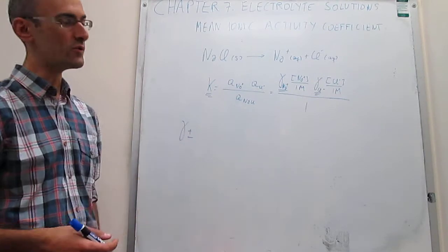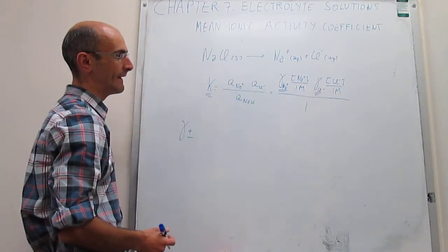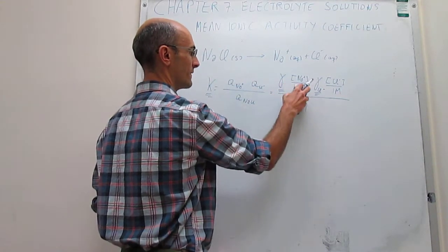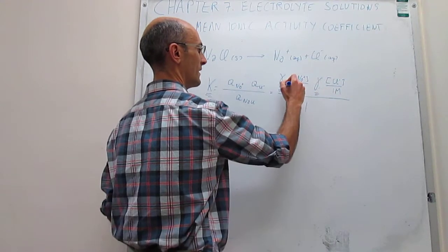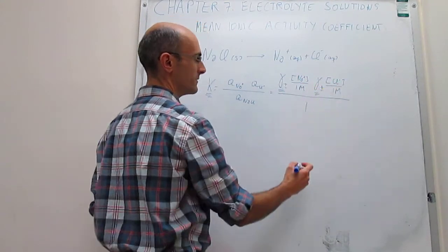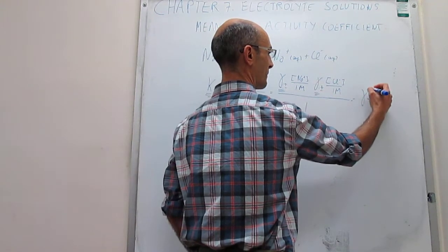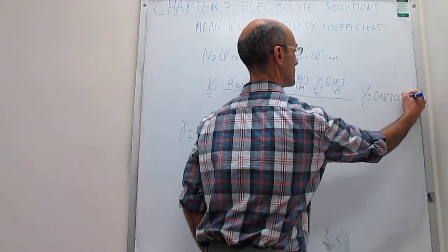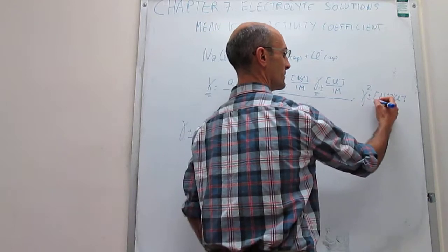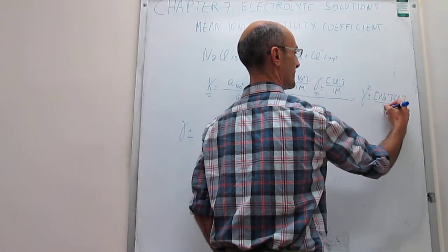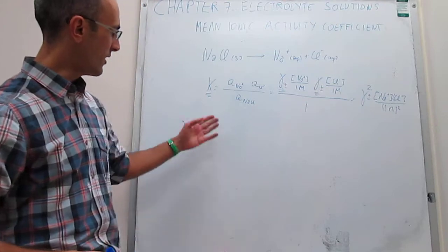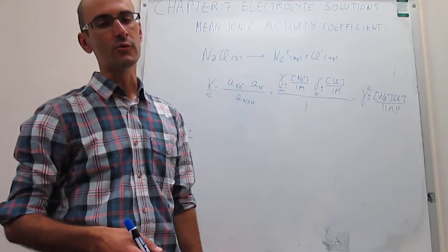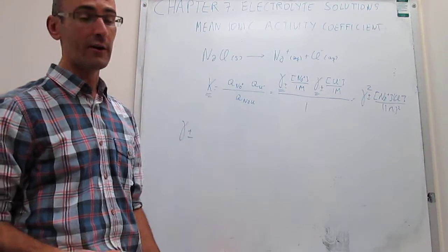The mean ionic activity coefficient γ± is something we can use to replace the individual coefficients, which cannot be measured easily. So instead of writing separate activity coefficients for Na⁺ and Cl⁻, we write γ± for both. What you then have is γ±², multiplied by the concentration of sodium ions and the concentration of chloride ions, divided by one molar squared so that the units cancel and you have a dimensionless equilibrium constant. These activity coefficients are also dimensionless.